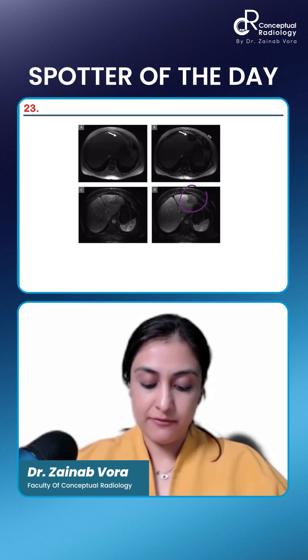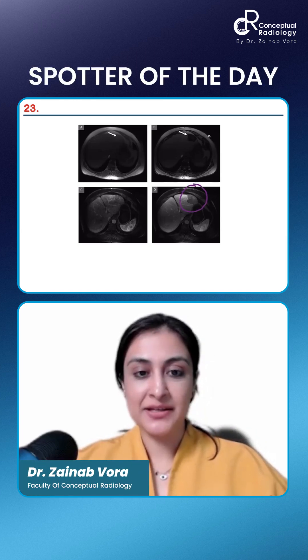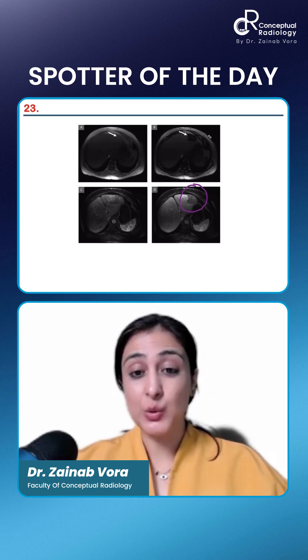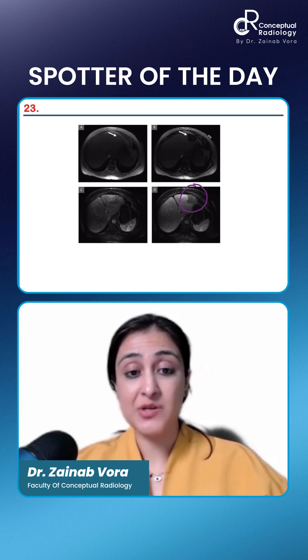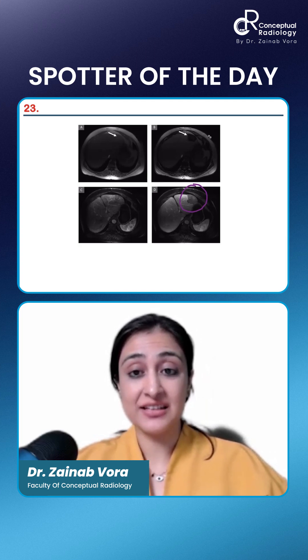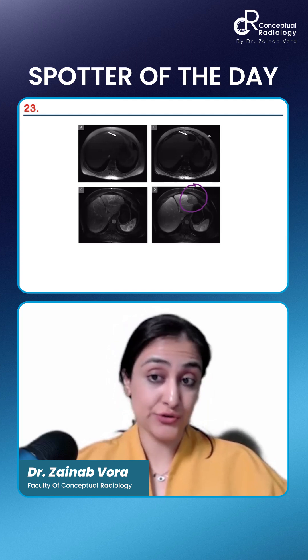There is a mass which you can see here. Is it fat sparing? Is this the location of fat sparing? What is this segment? This is segment 2 of liver, 2 and 3. Why will there be fat sparing in segment 2 or 3?